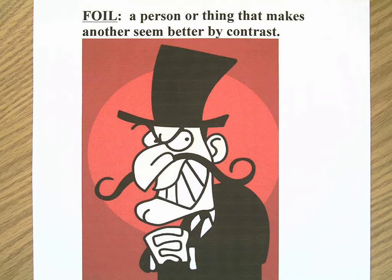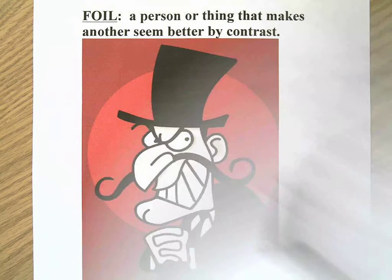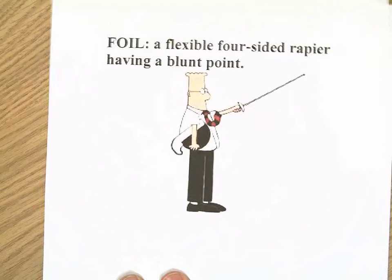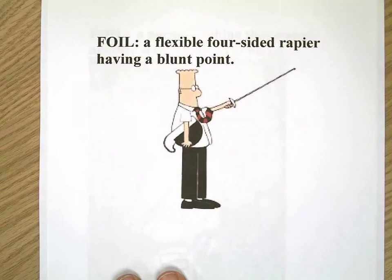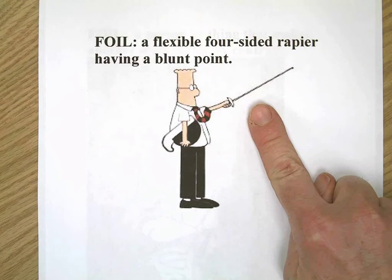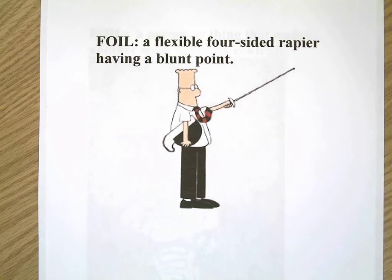What about Delbert here? What is he holding? He's holding a foil! That's right, a flexible four-sided rapier having a blunt point. Hey, I thought this was the Witcher Math Channel, what are you doing defining words, Mr. Witcher?